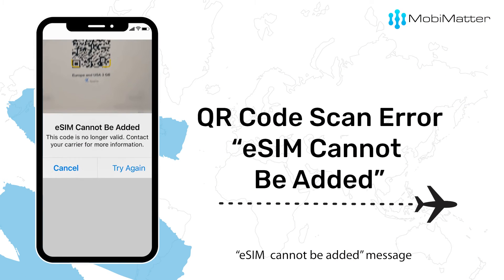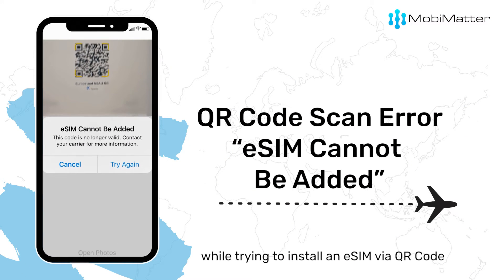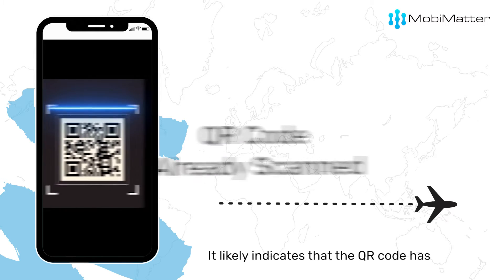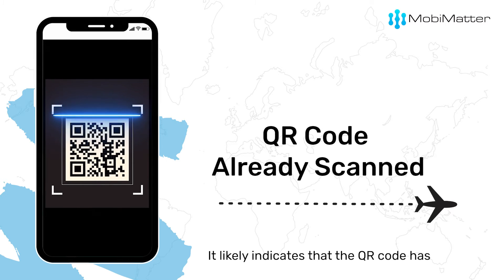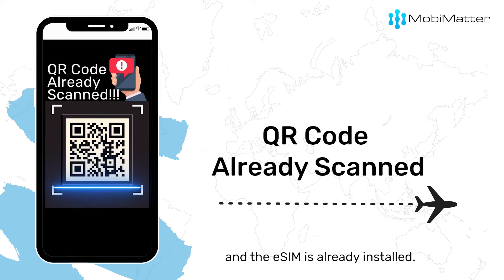If you encounter the 'eSIM cannot be added' message while trying to install an eSIM via a QR code, it likely indicates that the QR code has already been activated and the eSIM is installed.